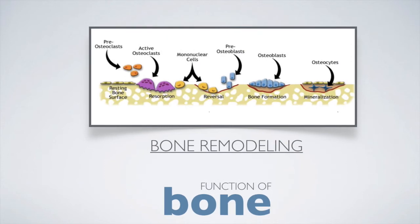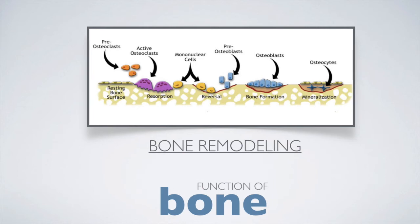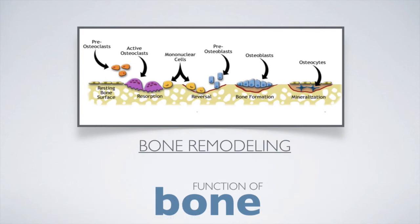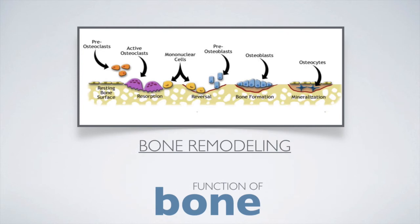Bone is constantly being created and replaced in a process called remodeling. This turnover of bone is a process of resorption followed by replacement of bone with little change in shape, and is carried out by osteoclasts and osteoblasts.